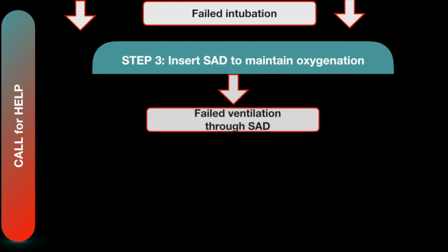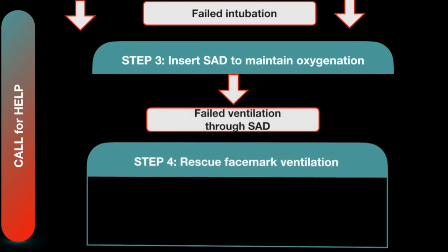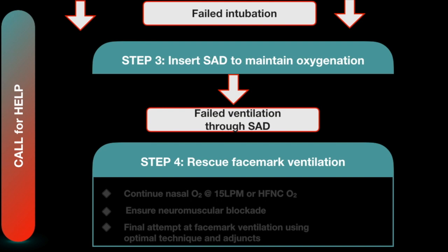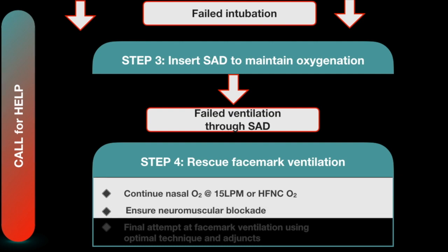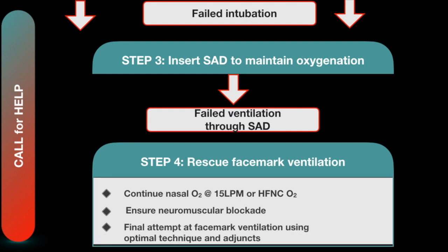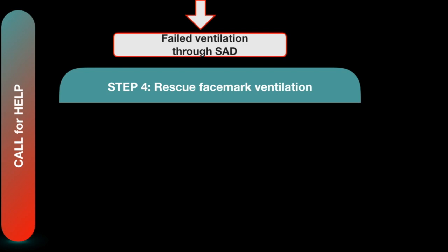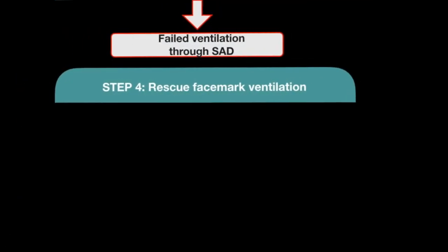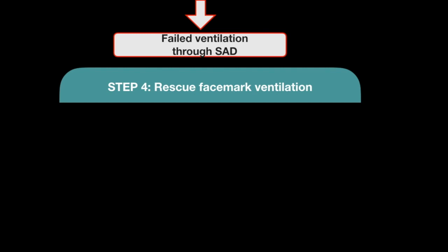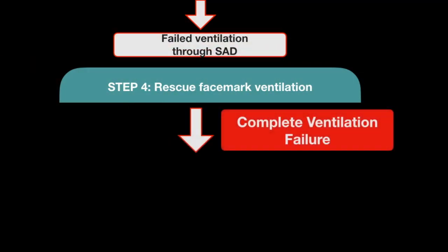If ventilation through the supraglottic device fails, move to Step 4: rescue face mask ventilation. Continue nasal oxygenation at 15 liters per minute or high-flow nasal cannula oxygen. Ensure complete neuromuscular blockade and repeat a muscle relaxant if required. Make a final attempt at face mask ventilation using optimal technique and adjuncts. If rescue face mask ventilation is successful, proceed with percutaneous or surgical tracheostomy.